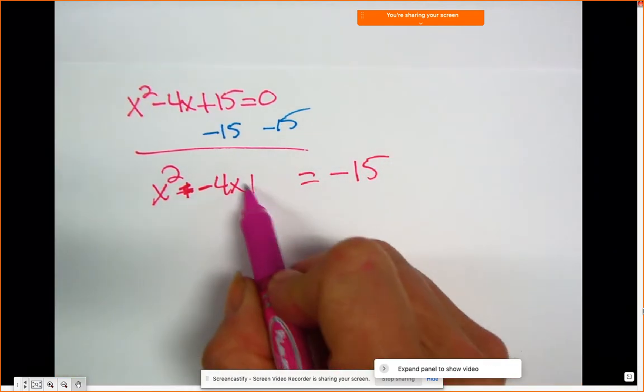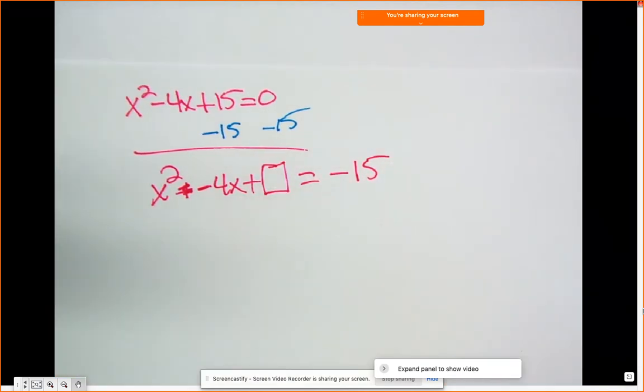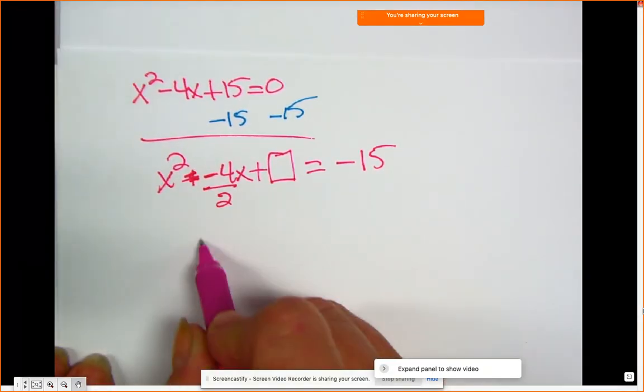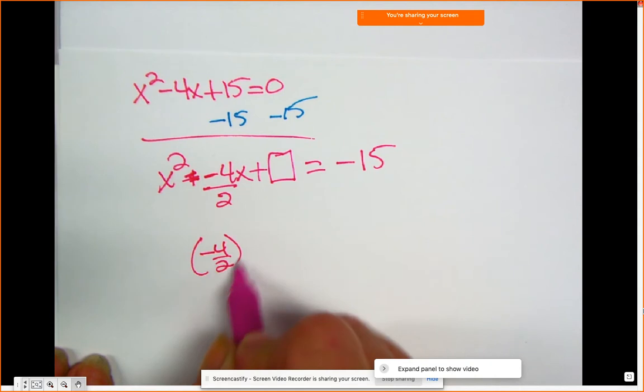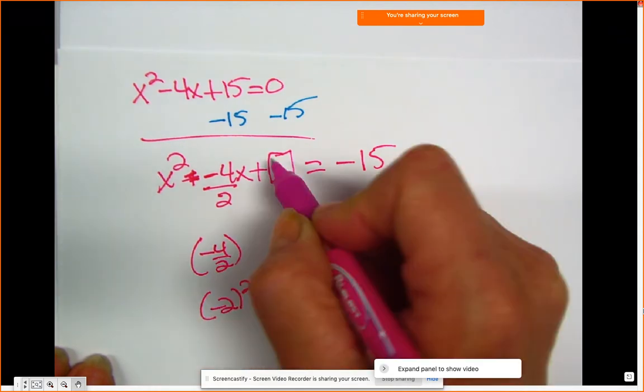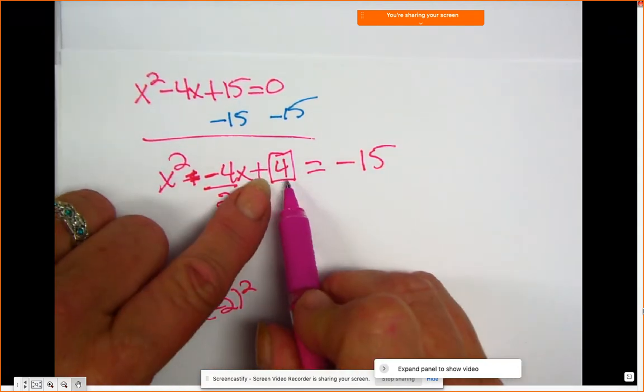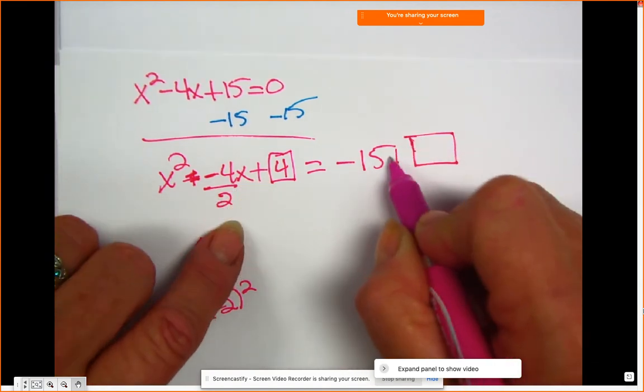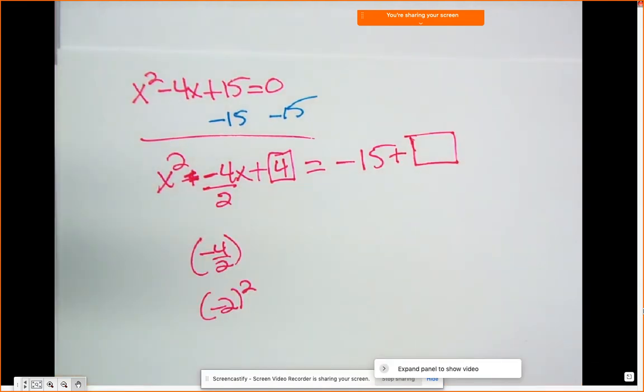Now I need to complete the square. Okay, so the way you do it, you take half of this middle number. So negative 4 over 2 is negative 2 and you square it. I get a 4. But I just added 4 here, so I better add 4 here. So usually when I say complete the square, I put a square on both sides. So I know that I'm keeping things in balance.